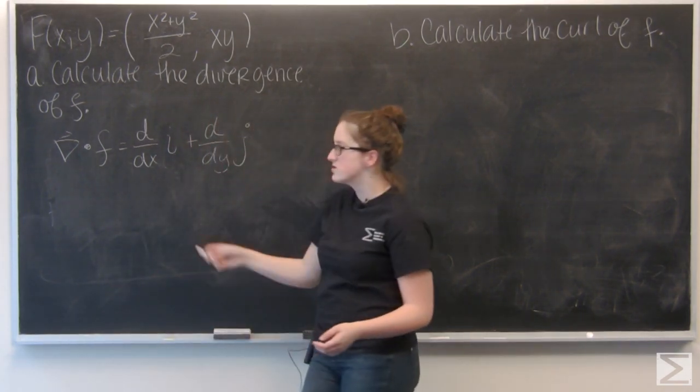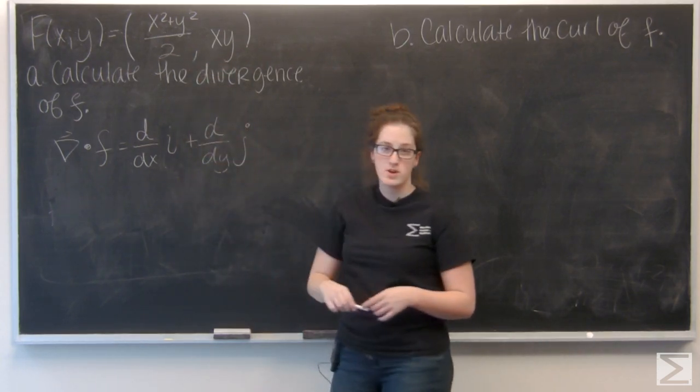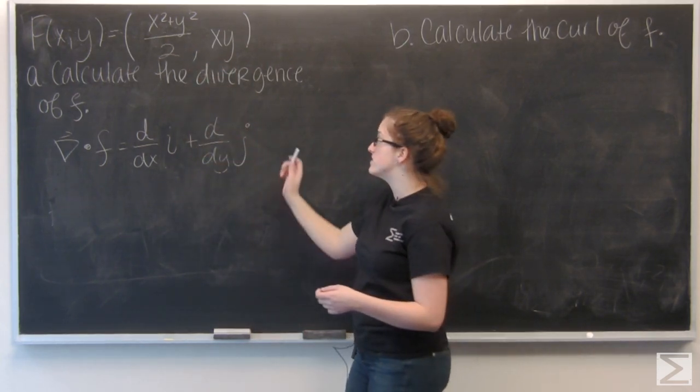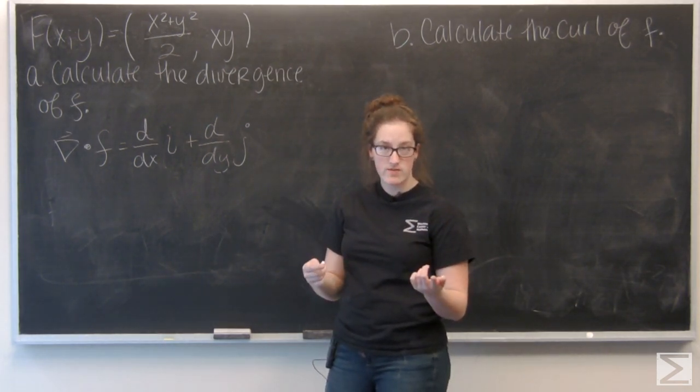So it is the partial derivative with respect to x of the i component of the vector plus the partial derivative with respect to y of the j component of the vector. So let's go ahead and plug in f and see what we get.